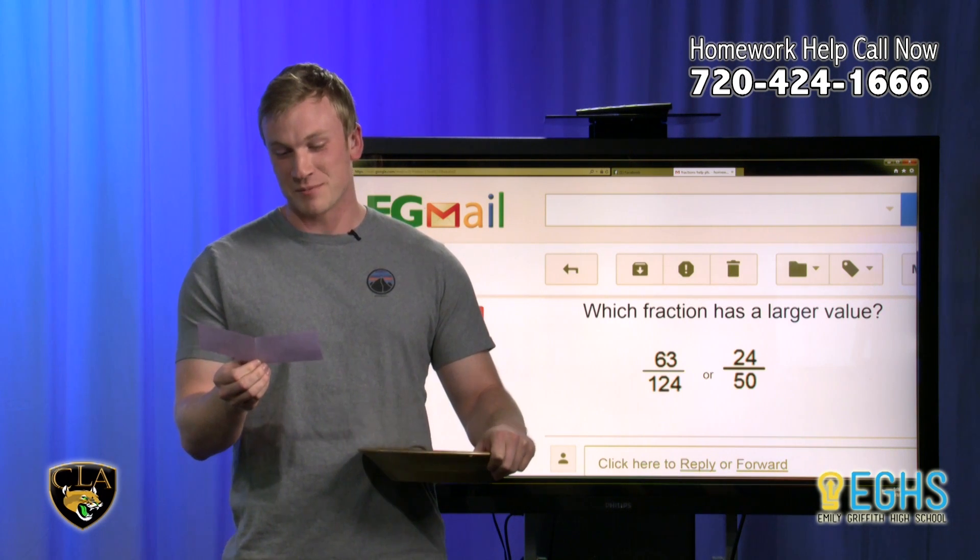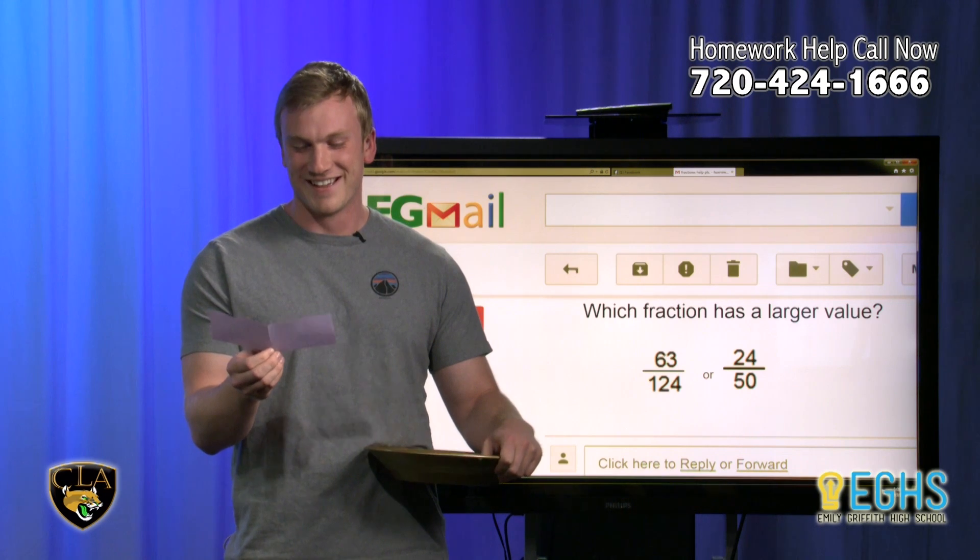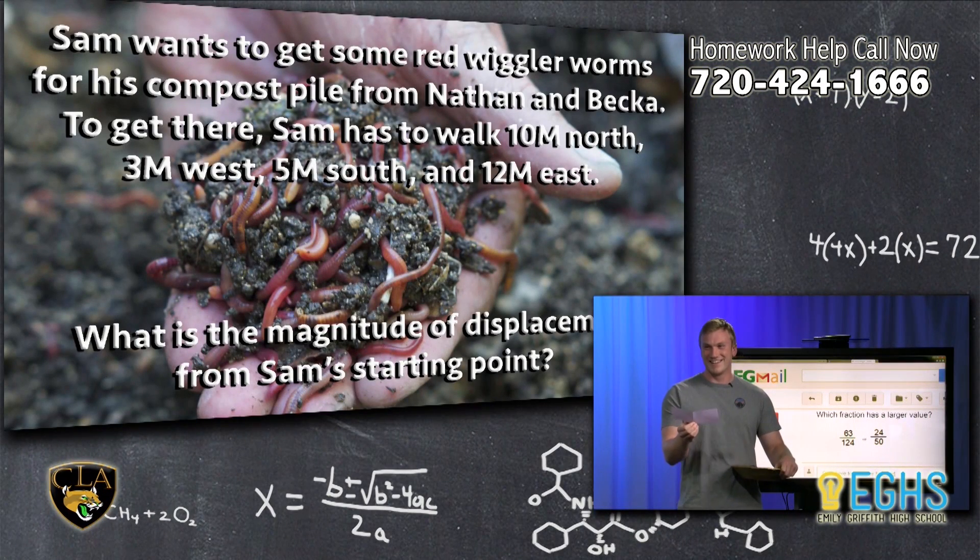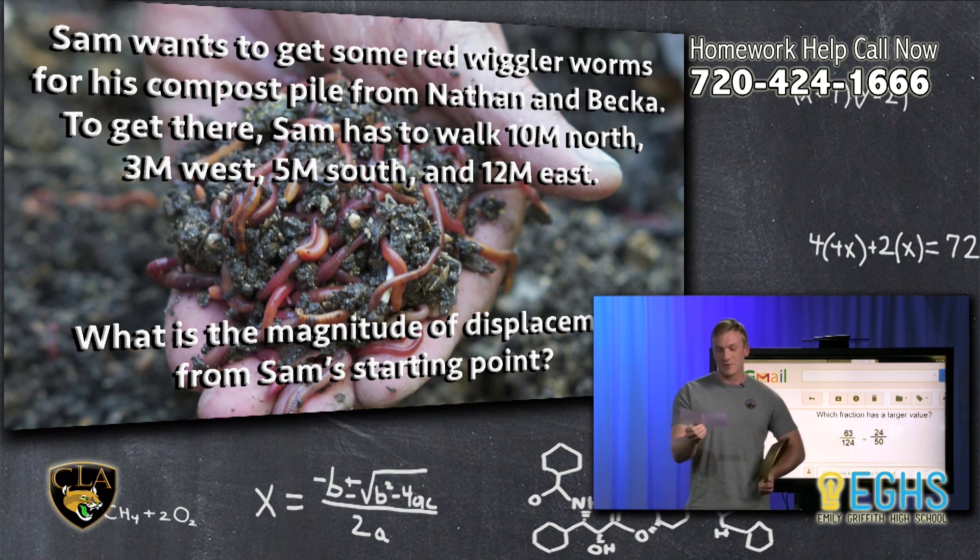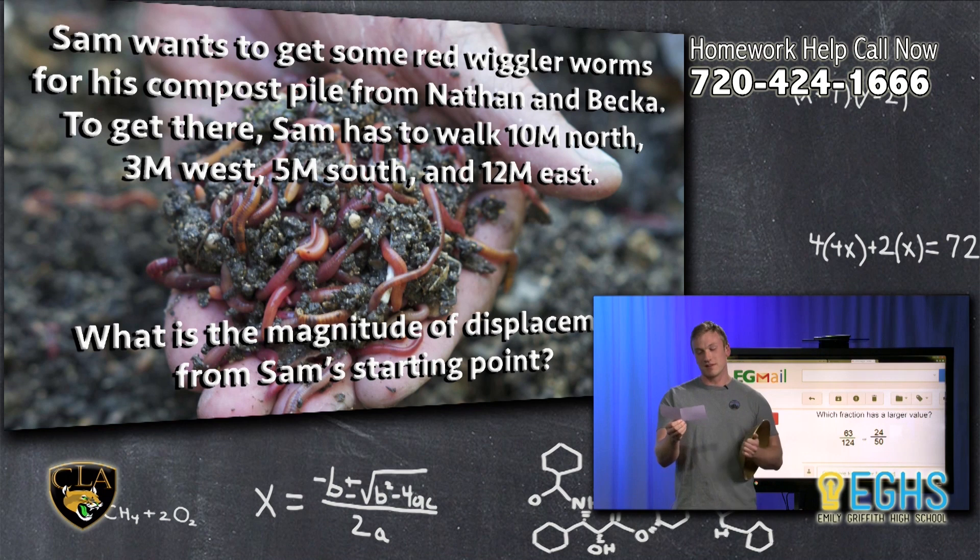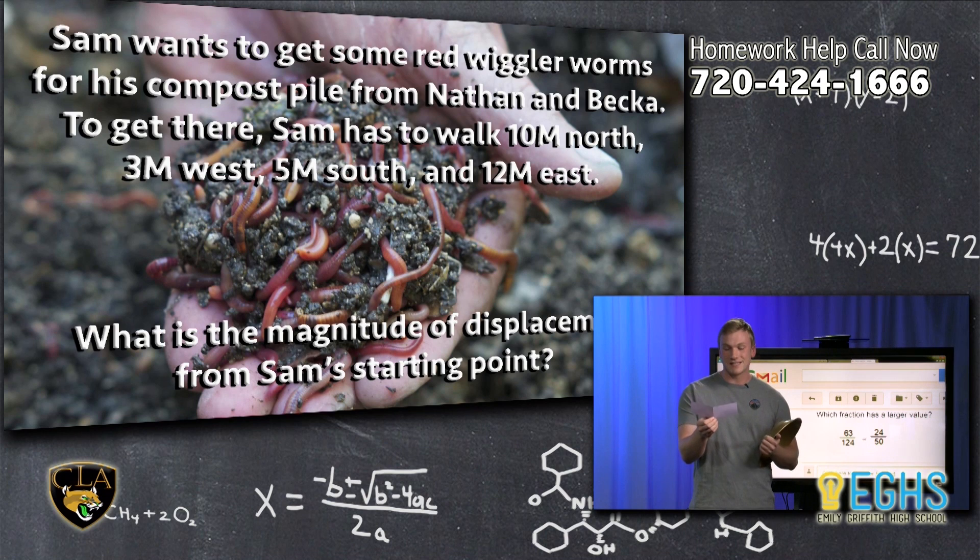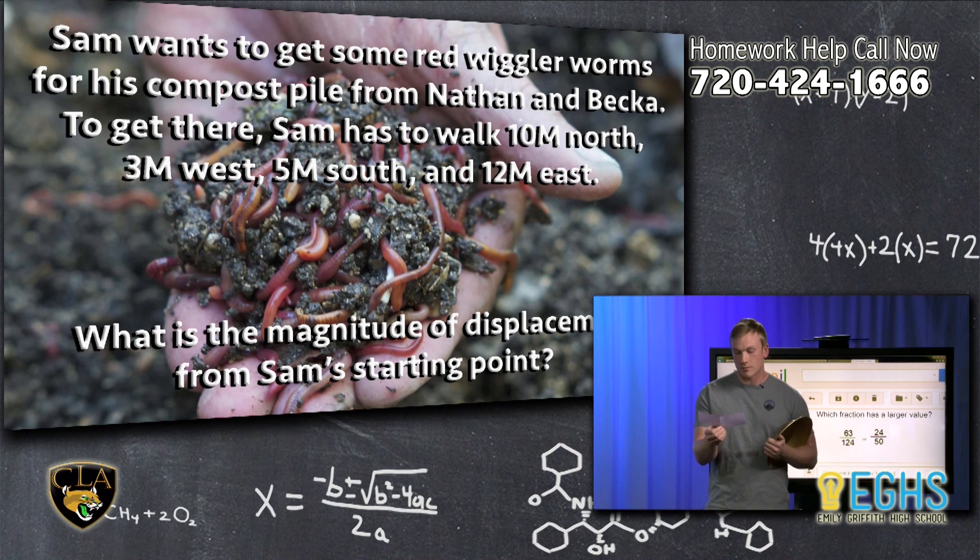The title is Sam's Red Wiggler Sojourn. These titles are so awkward slash suggestive. Right, they really are. So the question is, Sam wants to get some red wiggler worms for his compost pile from Nathan and Becca. To get there, Sam has to walk 10 miles north, 3 miles west, 5 miles south, and 12 miles east.